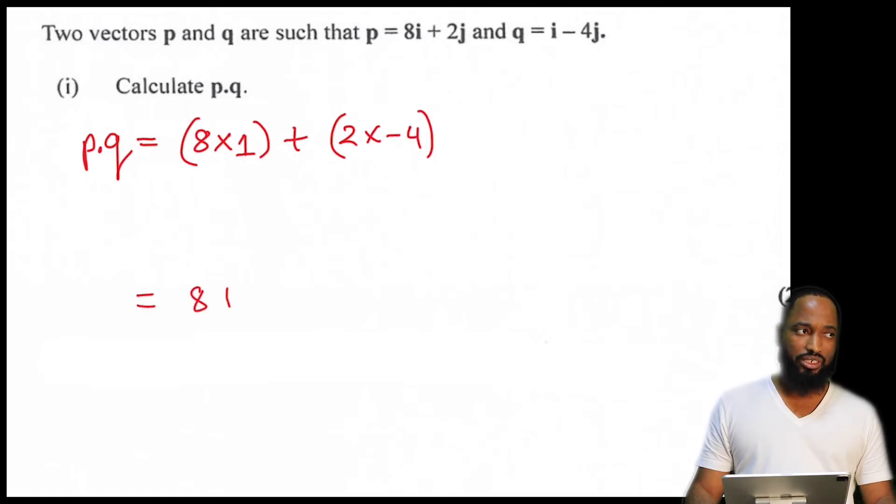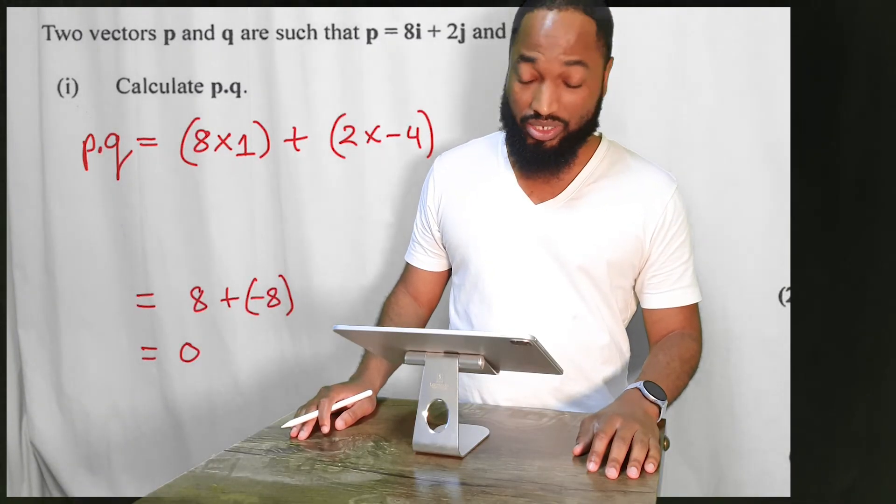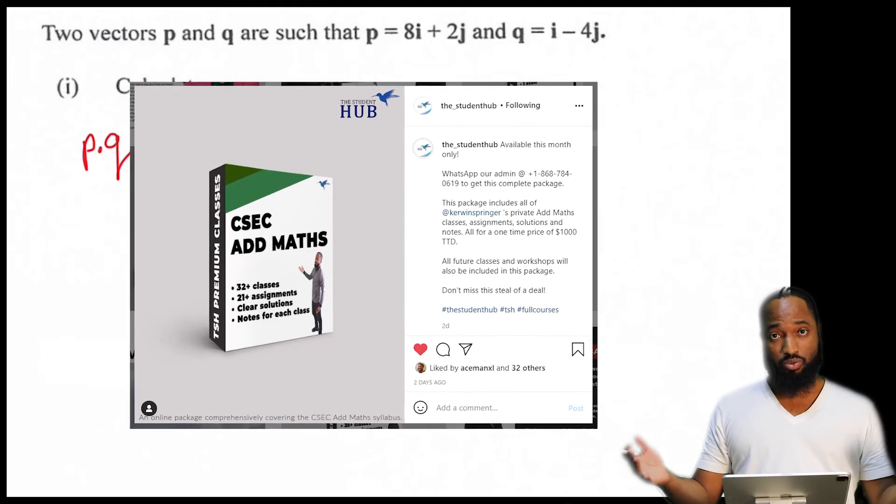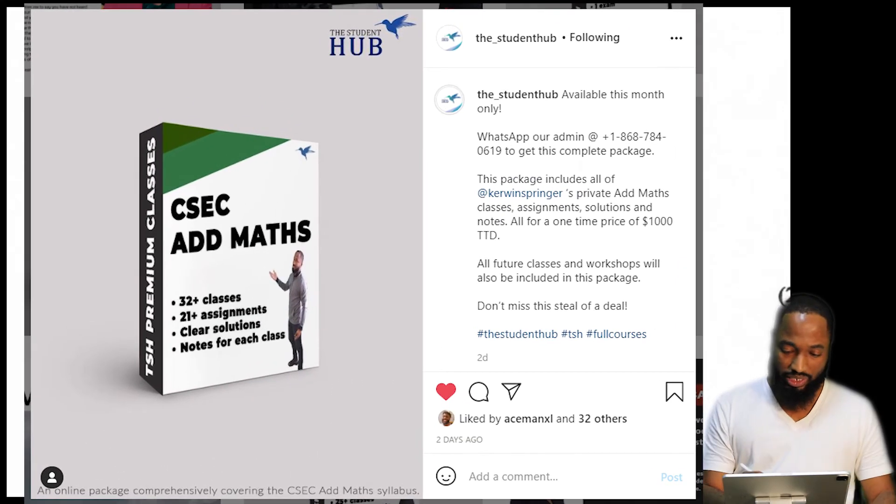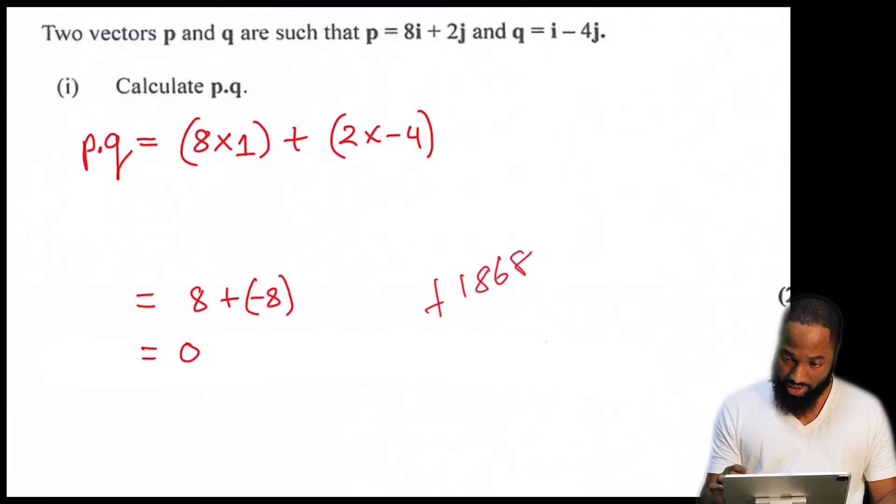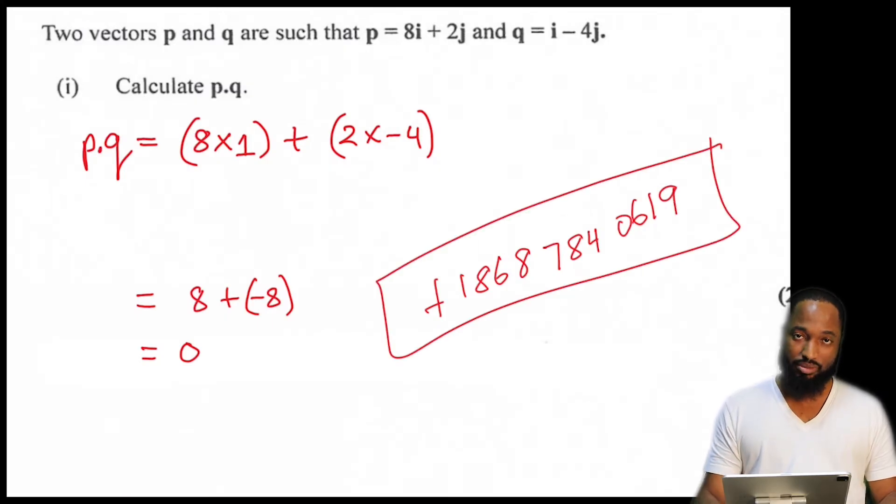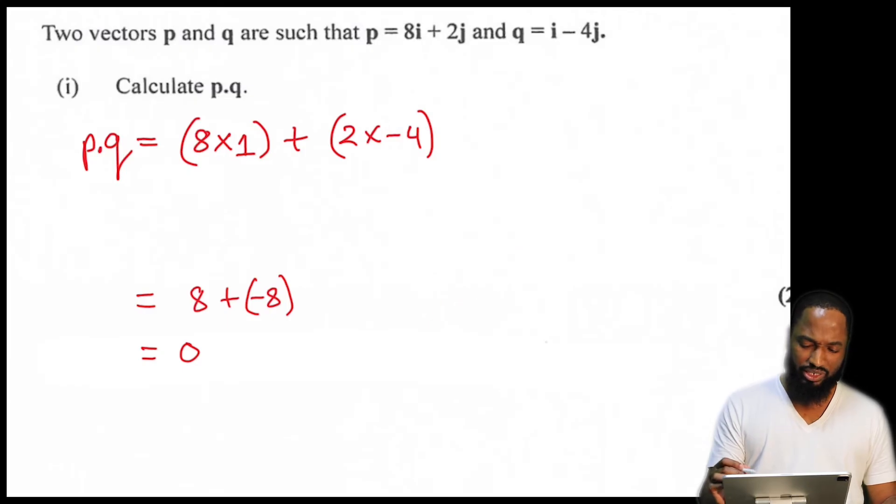So, this is the past paper. This is 2019. There was no paper two in AdMaths. 2020 was a crazy year. So, we did the dot product already. We did this in earlier videos. Y'all could always check out the earlier videos I have on vectors. By the way, if you want to join my AdMaths class, that is open as well. Message WhatsApp this number across the Caribbean. So, I have students across the Caribbean. Shout out to all you people in St. Vincent. We praying for Barbados and no volcanic eruption. I didn't type out my personal number there. Wrong number. There's a next number again. 7, 8, 4, 0, 6, 1, 9. So, you WhatsApp this number to get in contact with the student hub. Or you can look us up on Instagram. The student hub, Kervin Springer. Back to the question.